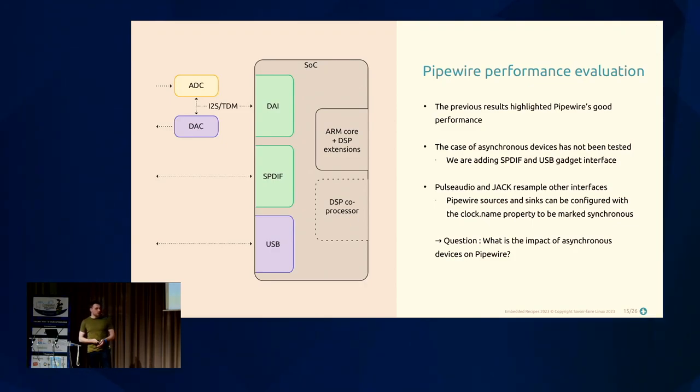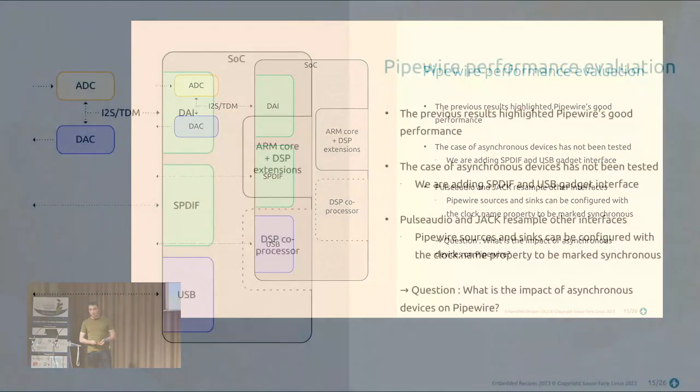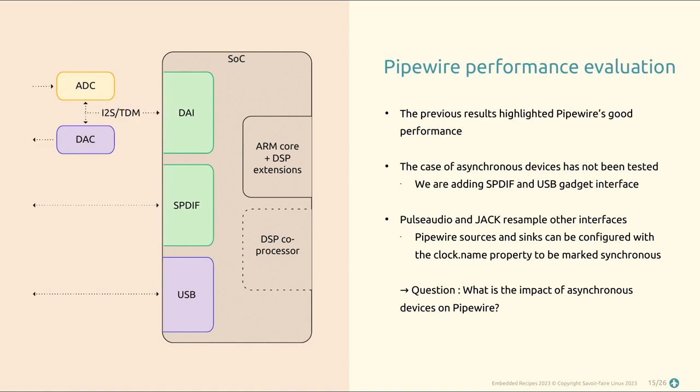These experiments, done over a year ago, highlight that PipeWire has good performance. Even if it has slightly more CPU consumption than PulseAudio, it can replace it in embedded audio systems to significantly reduce latency, which is sufficient for many use cases. For JACK, there is a lot of interest. However, the evaluation at that point used a single synchronous interface with no asynchronous interfaces.